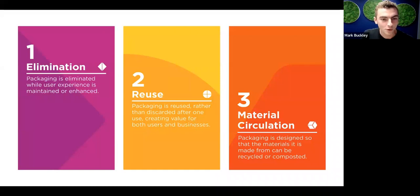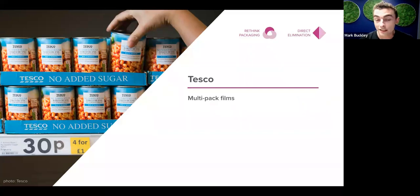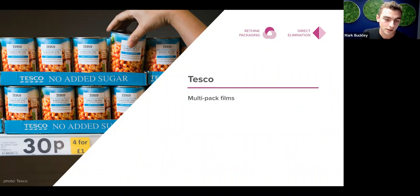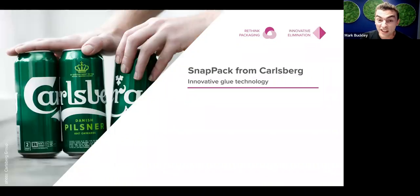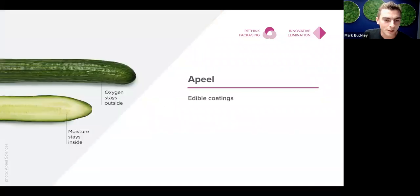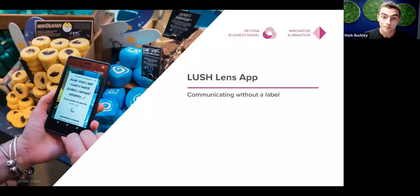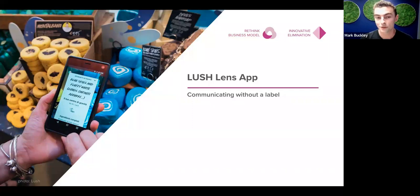Let's look at elimination. It can be done directly — like Tesco removing plastic film wrapping from around their cans, simply changing the design of the in-store multi-buy experience at the checkout. Sometimes it needs a bit of innovation: Carlsberg uses glue dots to hold cans together, eliminating the need for plastic rings. And Lush has changed not just the packaging but the product itself — selling shampoo as a bar, which means no need for a bottle. They use a product recognition tool to give customers more information about ingredients and usage tips than could ever fit on a label.